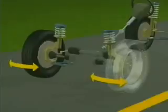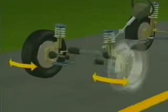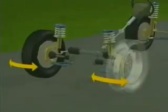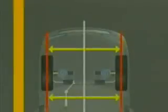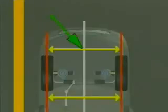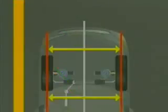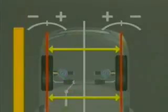The most critical alignment angle is total toe on the steering axle. Excessive positive or negative toe will cause scuffing and wear on the shoulders of the tires. Total toe is defined as the difference in distance measured across the front of the tires compared to the distance measured across the rear of the tires, and is measured in inches or millimeters.